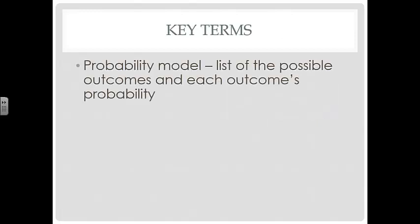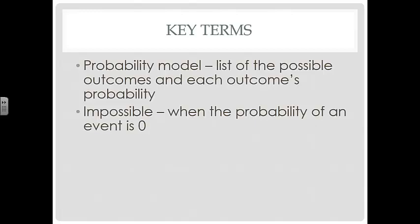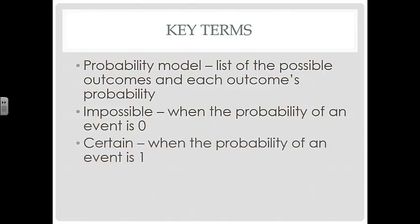All right, so a probability model is just a list of all the possible outcomes and each outcome's probability. It's impossible when the probability of an event is equal to 0. And it's certain when the probability of an event is equal to 1.